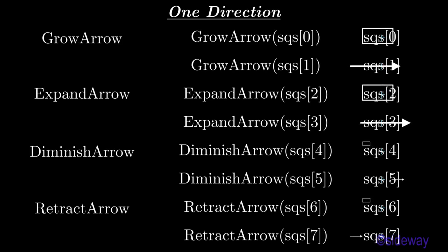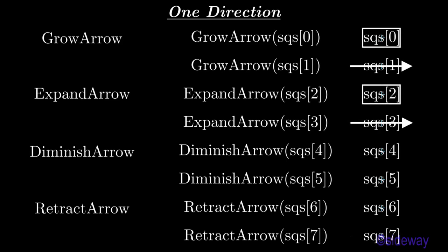DiminishArrow method is used to diminish a mathematical object at an end point animatedly. RetractArrow method is used to diminish a mathematical object at a start point animatedly.